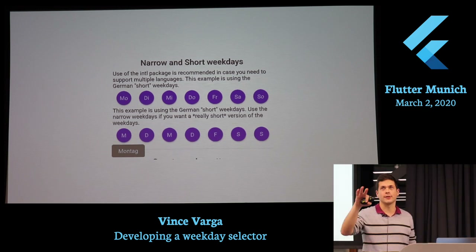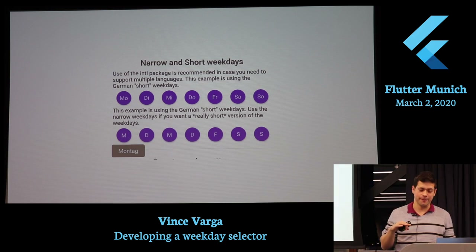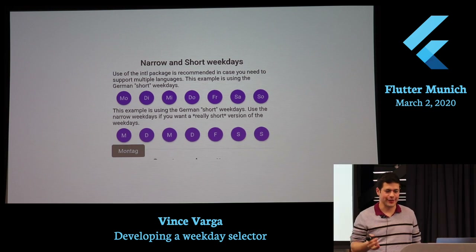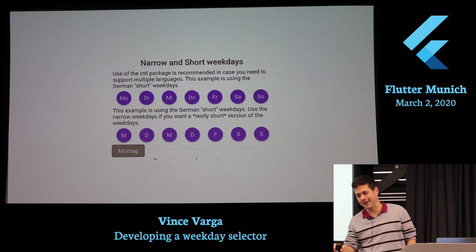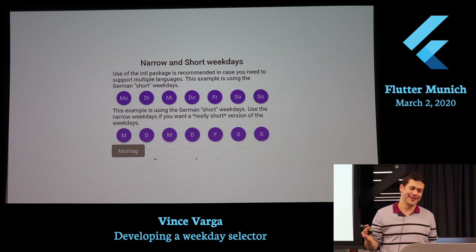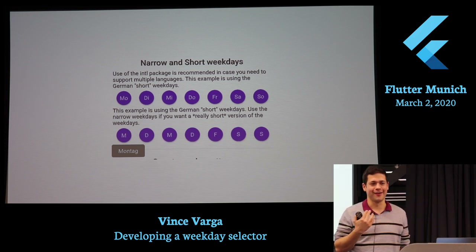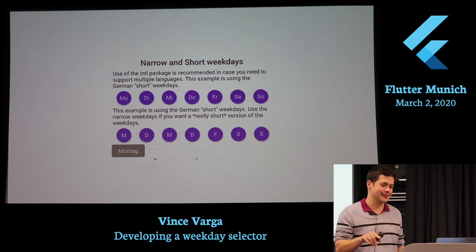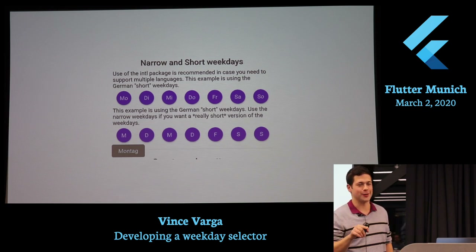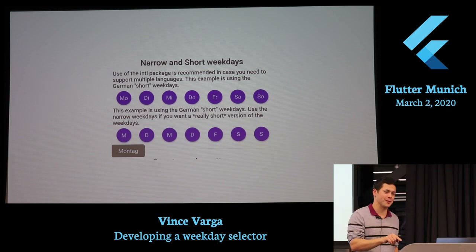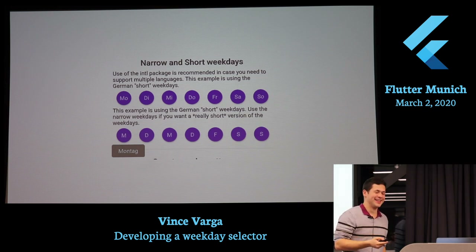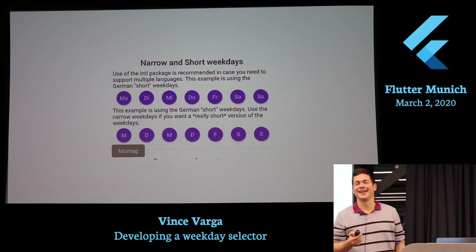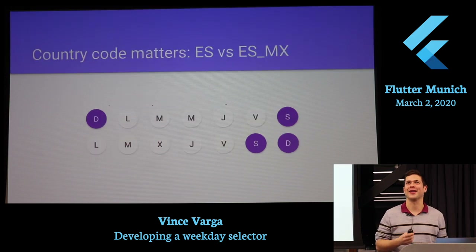I also wanted to add a little tooltip, so if users get confused they can long press on the day. Though of course, if a user is confused by seven circles, they probably won't know that long-pressing gives an explanation. I think I totally missed the point there.